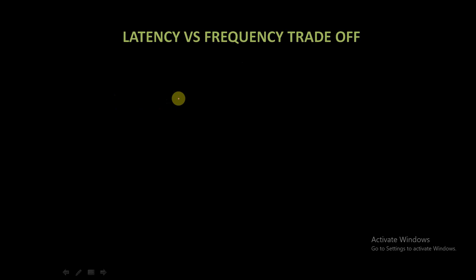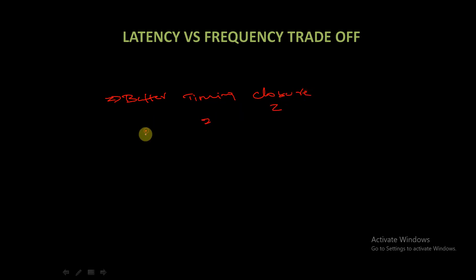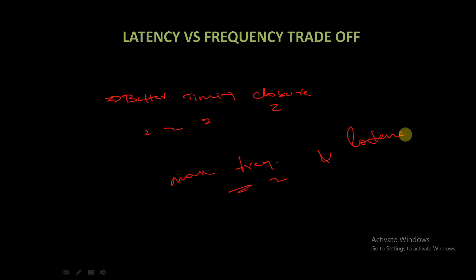Now, why would someone willingly introduce an extra cycle of latency? It's all about striking the right balance. More pipeline stages often mean better timing closure, which is crucial for meeting frequency requirements in high-performance systems. It's a trade-off between latency and maximum frequency — we get more latency, but we also obtain a higher maximum frequency.